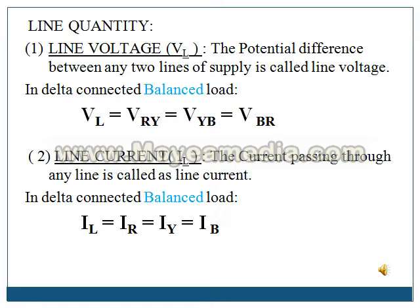Similarly, we will have line current. The current passing through any line is called as the line current. In delta connected balanced load, the three currents flowing in the three lines are IR, IY, and IB. As this is balanced load, IL is equal to IR, equal to IY, equal to IB.